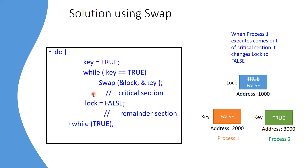We have seen two solutions: one using test-and-set and another using swap. Both operations are atomic and they satisfy mutual exclusion. However, they do not satisfy bounded waiting.